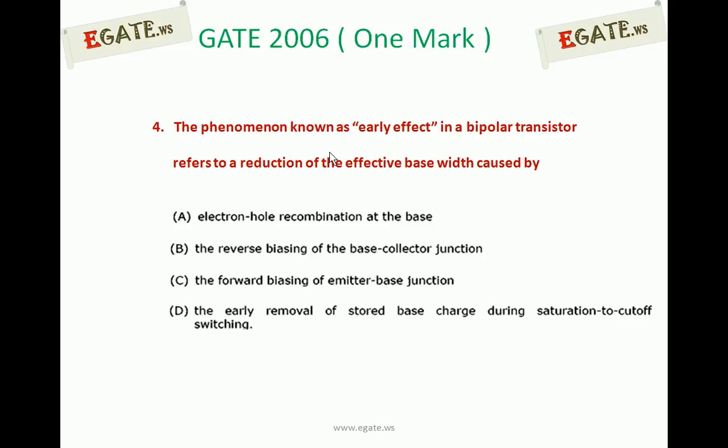The phenomenon known as early effect in a bipolar transistor refers to a reduction of effective base width caused by: A. Electron-hole recombination at the base. B. Reverse biasing of the base-collector junction. C. Forward biasing of emitter-base junction. D. Early removal of stored base charge during saturation to cutoff switching.